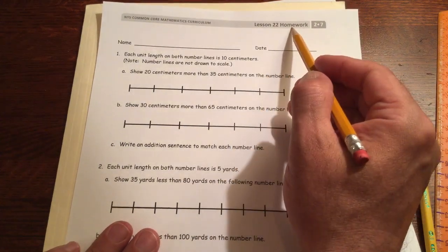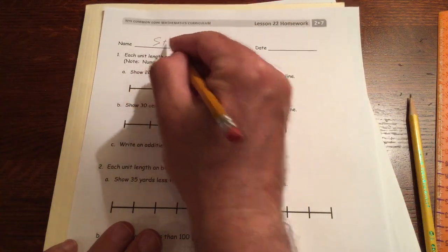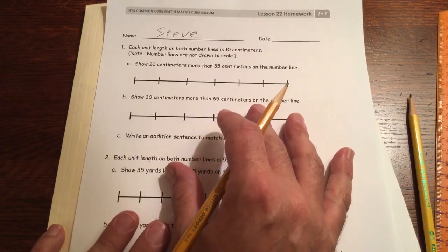This is lesson 22 homework, module 7, grade 2. Write your name. Don't copy mine.